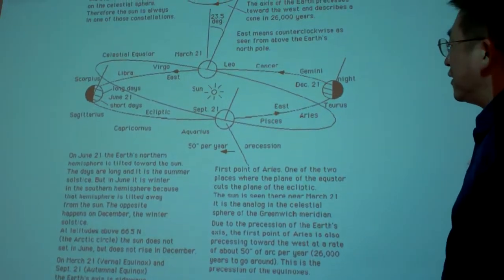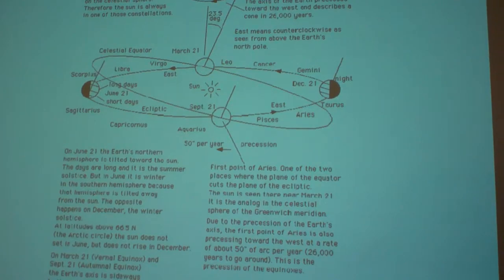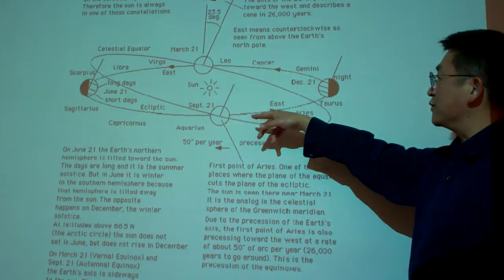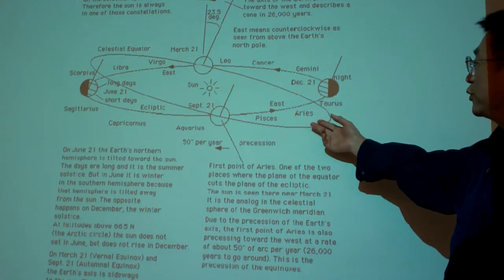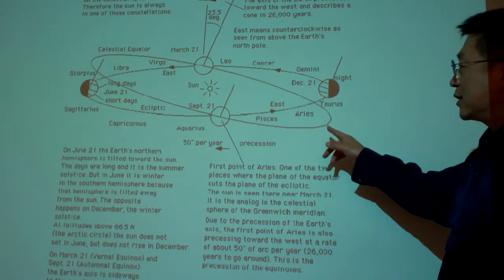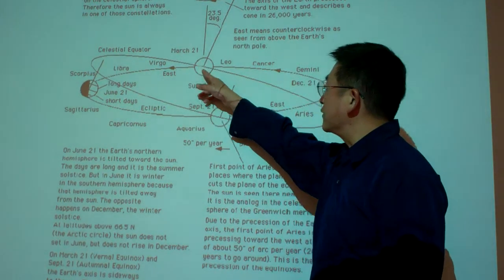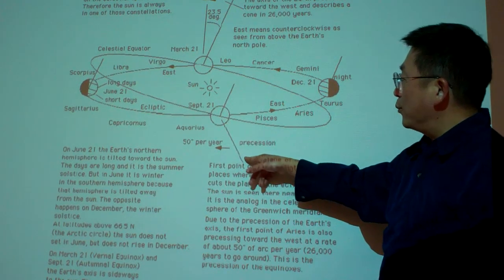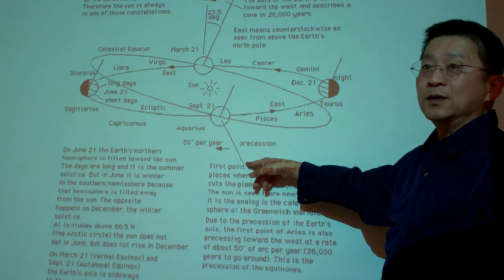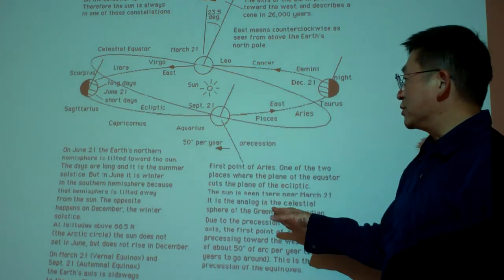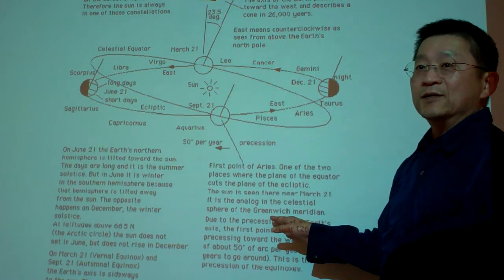Here we want to introduce the concept of the equinox. The equinox is basically a particular point — it is the intersection of two planes: the equatorial plane and the ecliptic. That intersection forms a line, and pointing to the vernal — which means the autumnal equinox direction — that direction was pointing to the constellation of Aries 2,000 years ago.